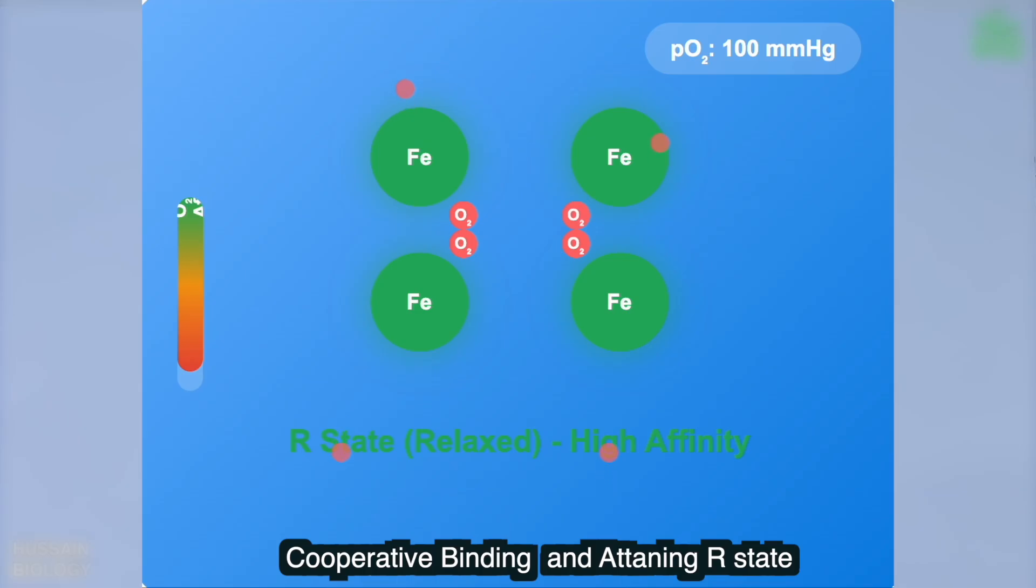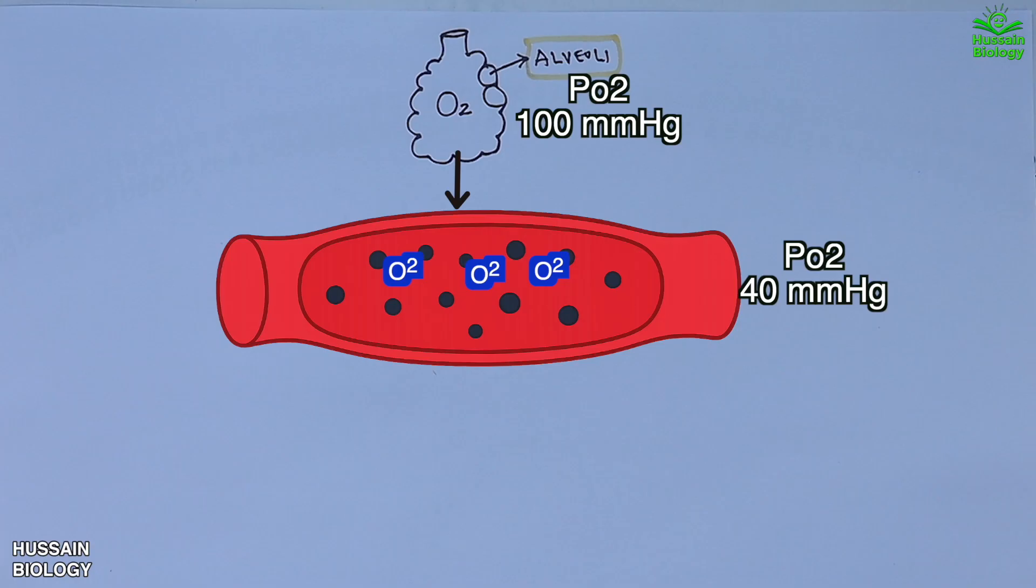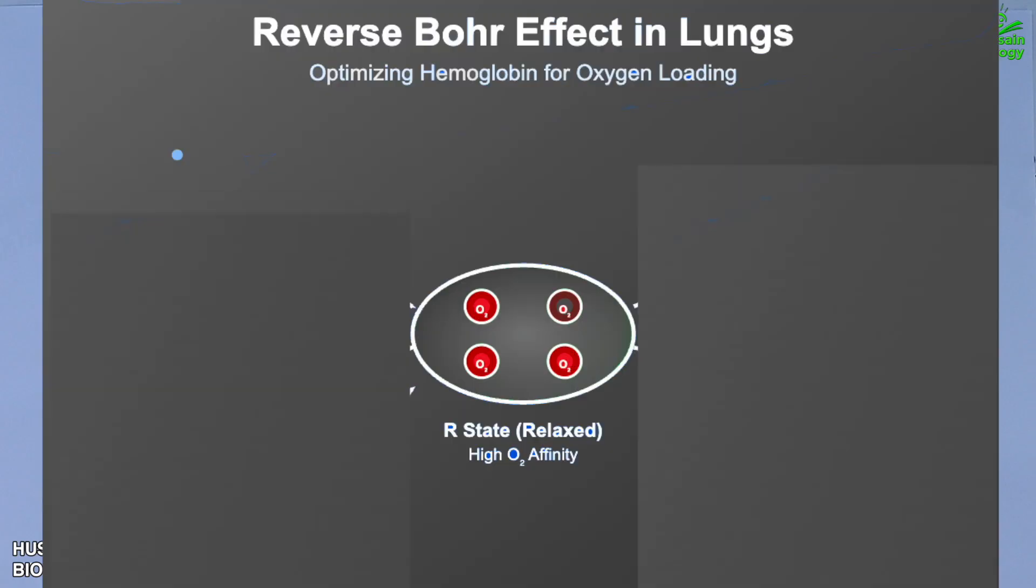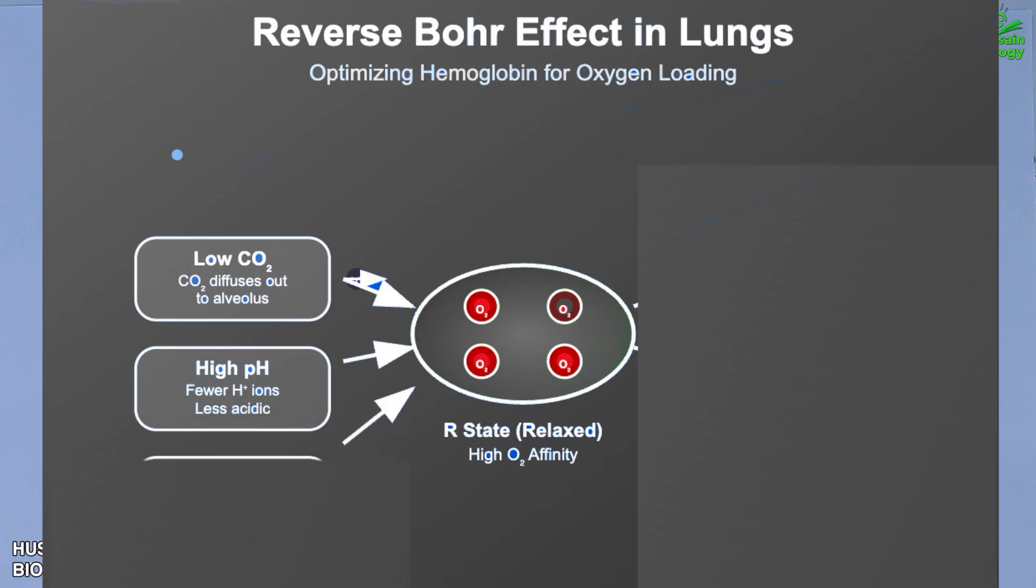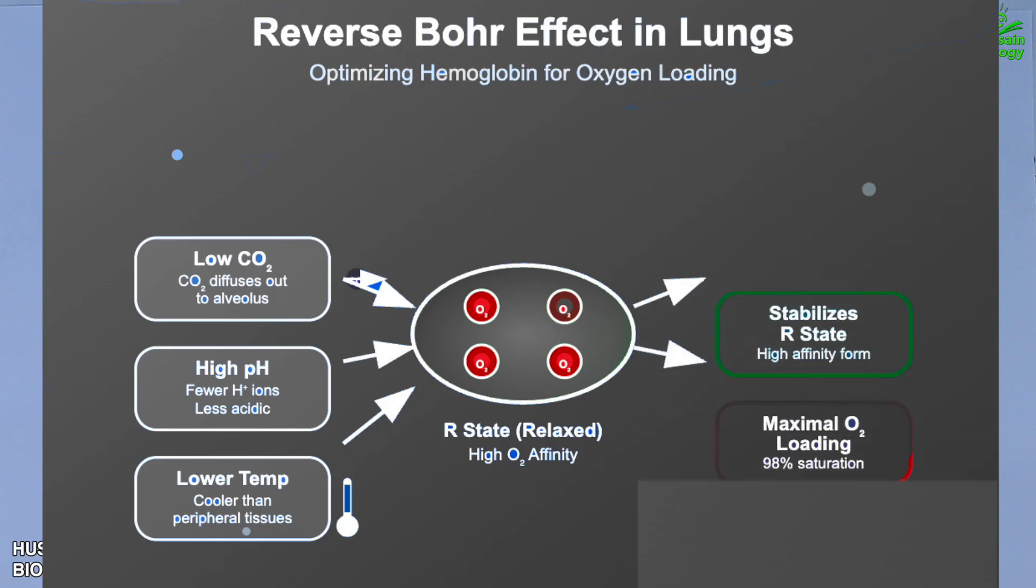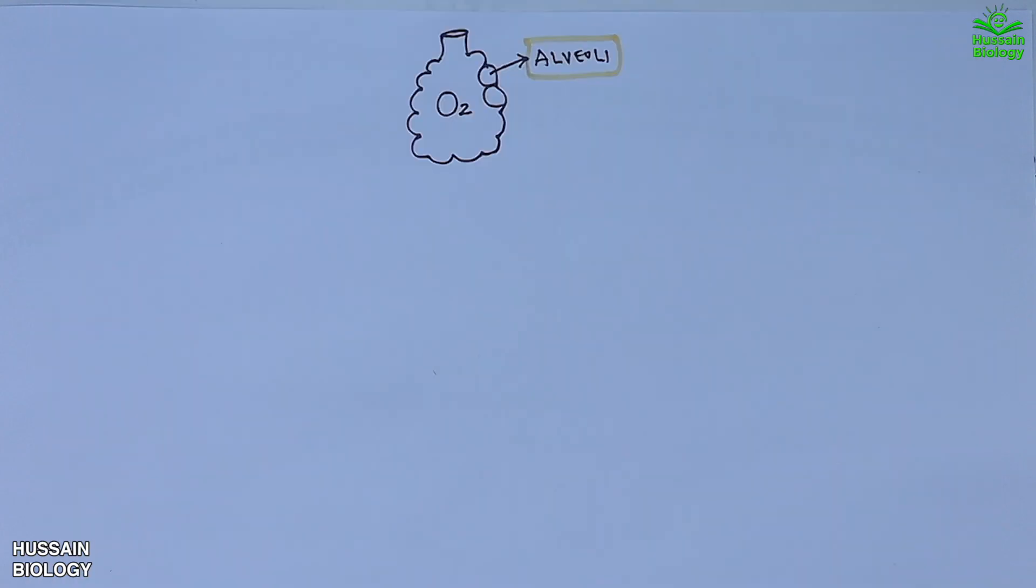Another factor here in the lungs is the reverse Bohr effect. Low CO2 levels (because CO2 diffuses out), high pH, and slightly lower temperature than tissues—all of these conditions stabilize the R state, increasing hemoglobin's affinity for oxygen and promoting maximal oxygen loading.